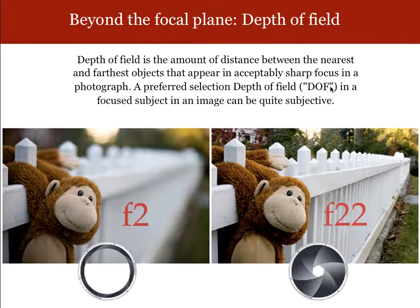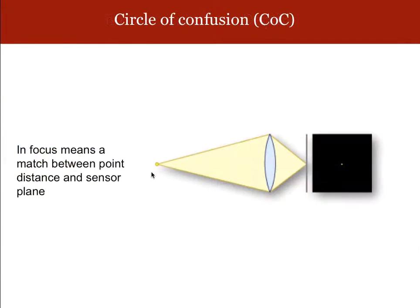This term depth of field is used widely in image making and in cameras, and sometimes you hear the word bokeh to refer to this effect of part of the image being in good focus and part of it being out of focus.